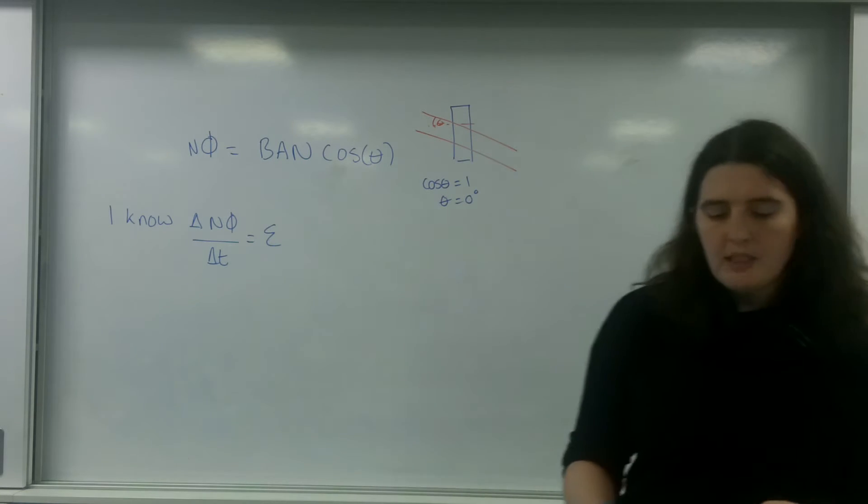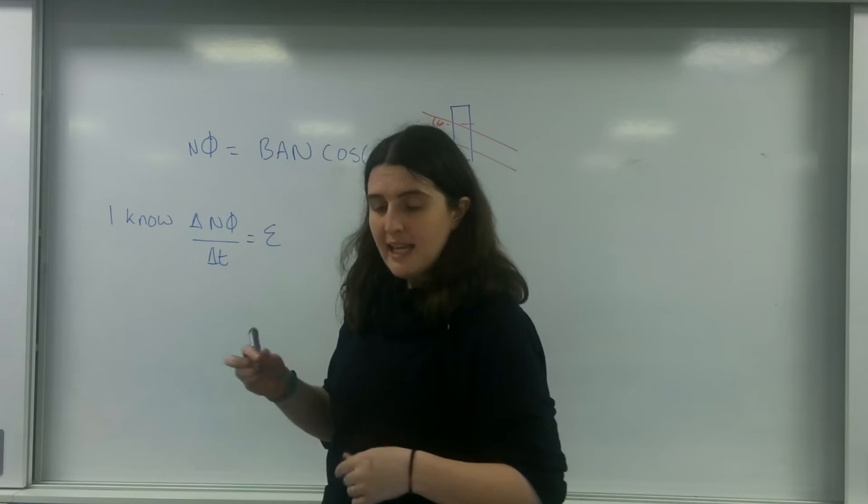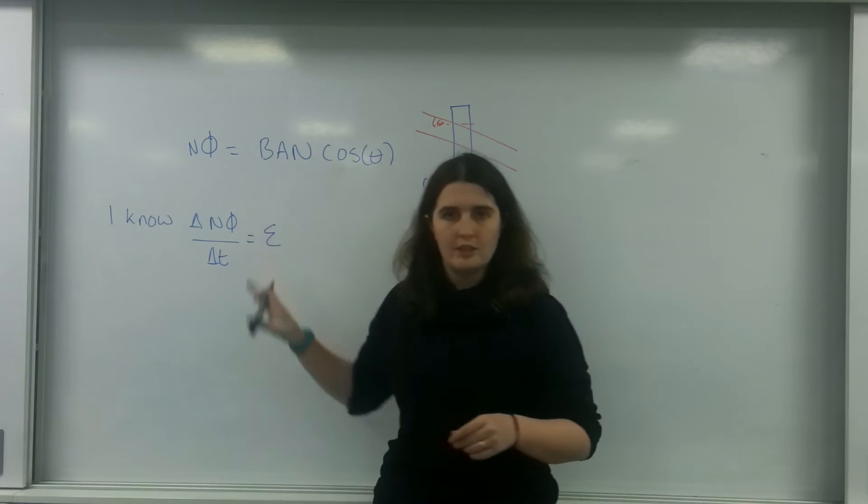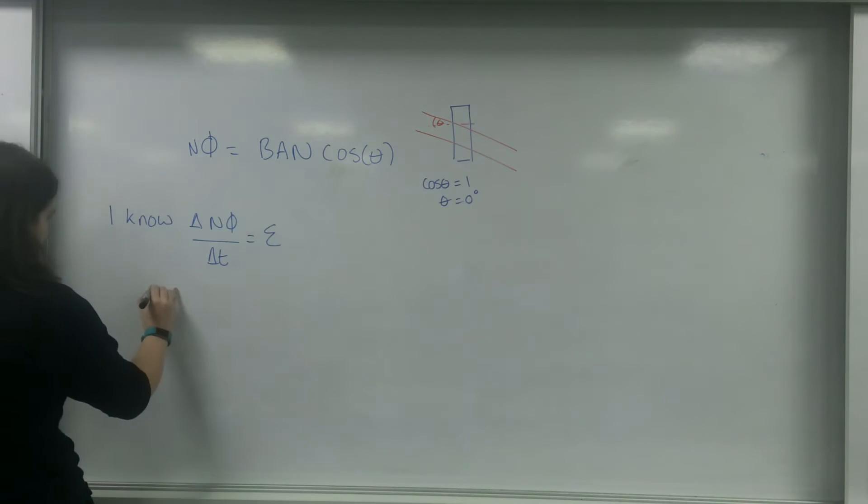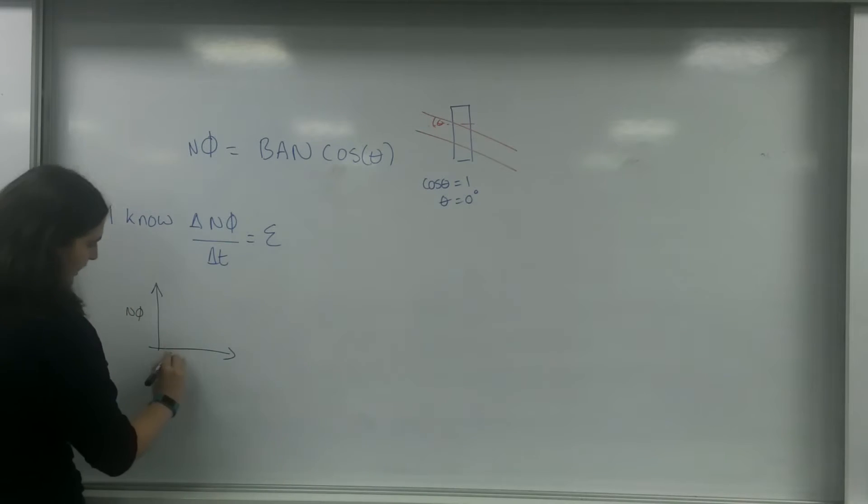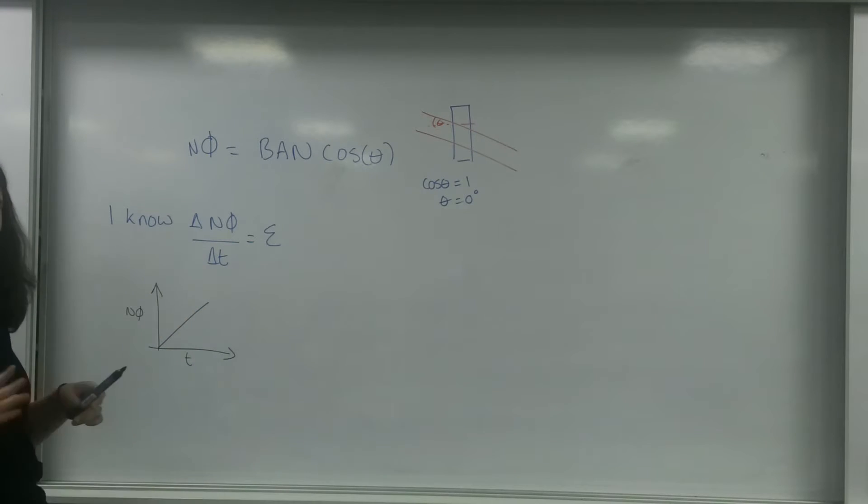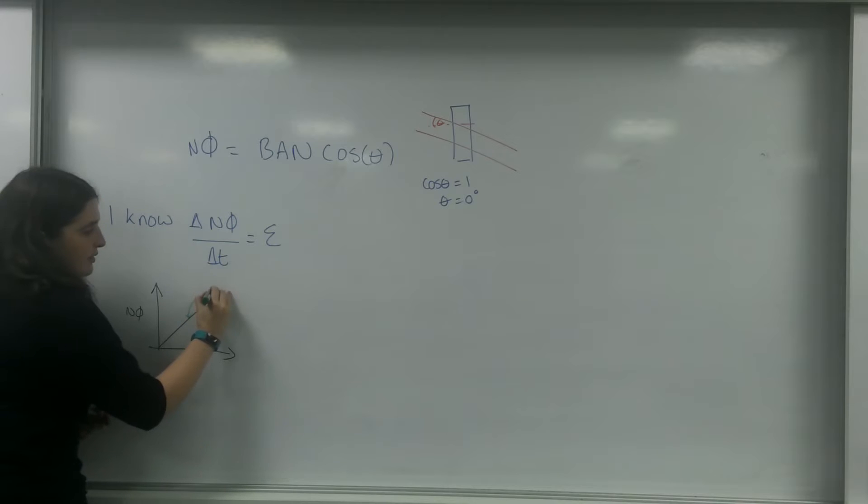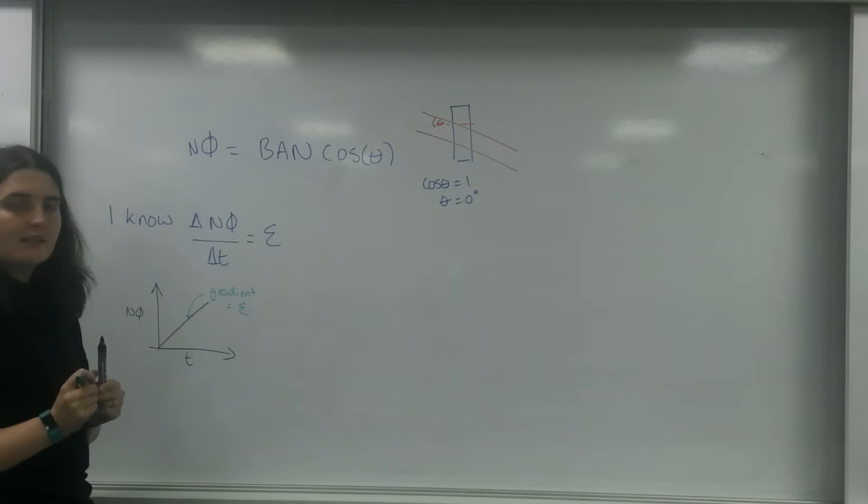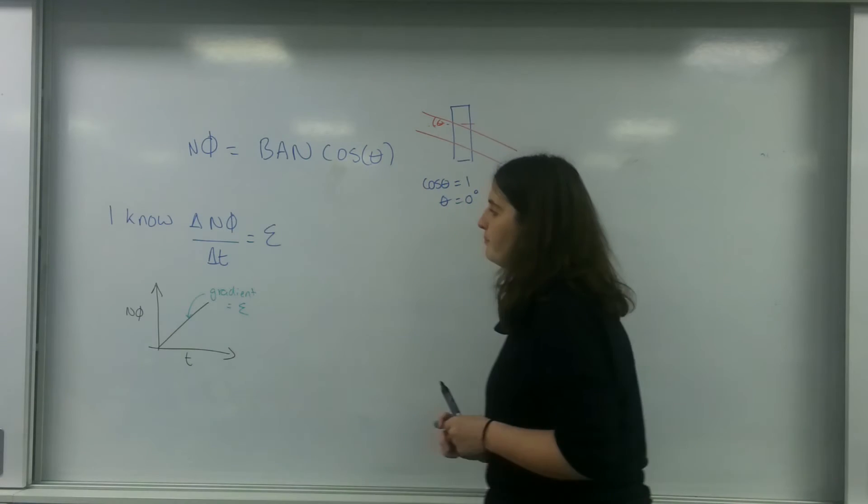Just something you need to be aware of, that here, this graph is technically a differentiation. If I had a graph of flux linkage and time with a lovely straight line graph, this is just an object moving from one position to another. This gradient here would equal the EMF made. The change in Y over the change in X would be my EMF that I would have made.